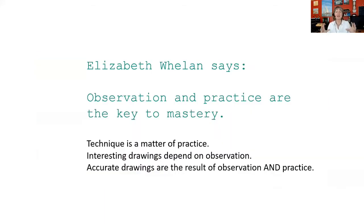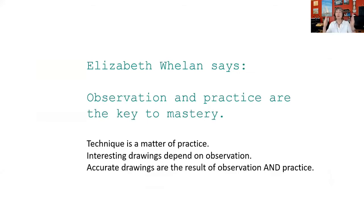Elizabeth Whelan says observation and practice are the key to mastery. Technique is a matter of practice — whichever drawing media you pick, pen and ink, charcoal, or whatever. Interesting drawings depend on observation: the more you look at things and try to figure out what a good scene would be, the better your drawing results will be. And accuracy — things like the still life, the faces, the bridge — it's difficult to get accuracy right out of the gate. Observation and practice have to happen all the time, and you will improve as you go.